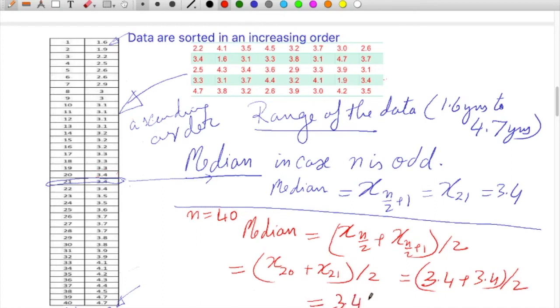Fortunately we are going to have (3.4 + 3.4) divided by 2, that gives us a median value as 3.4 years. This value gives us a significance that 50 percent of the batteries are having life less than 3.4 years. That's the significance of the median because median defines the midpoint.